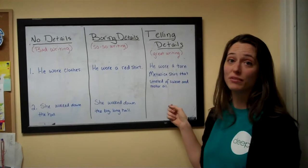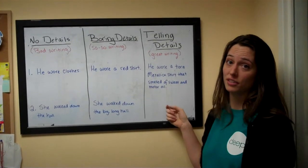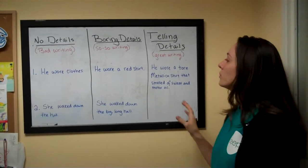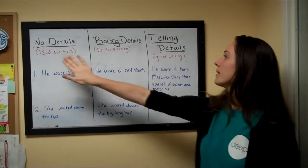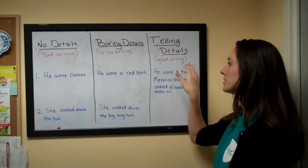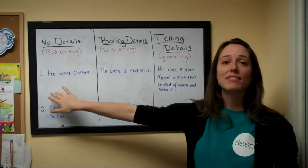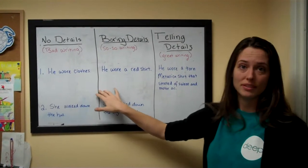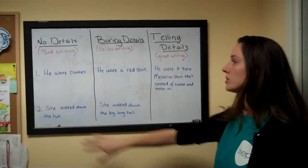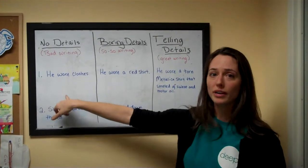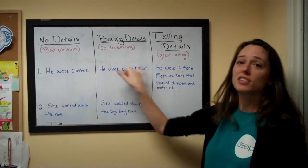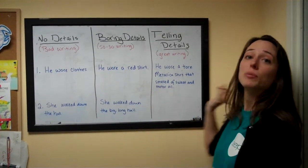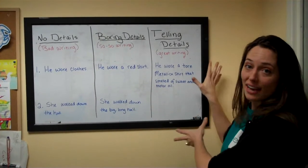This is the kind of writing we want our kids to do. When you're explaining it to your kids, start off by giving these terms, and then give an example where you start with something boring, get it a little better but still pretty boring, and then make it interesting and telling.